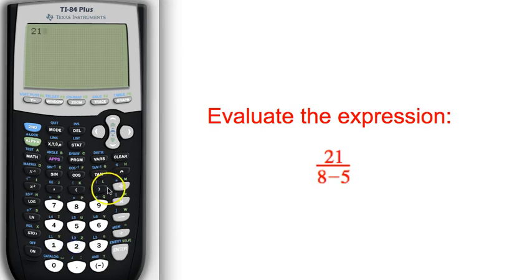when I enter that into my calculator, I must put that in parentheses. So in this case, the 8 minus 5 goes in parentheses. Because the calculator understands order of operations, it will now evaluate the 8 minus 5 first and give us the correct answer of 7.